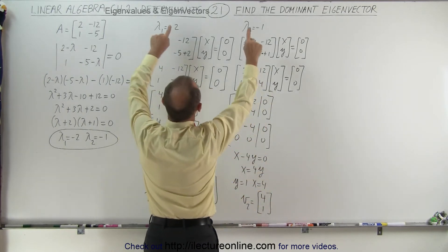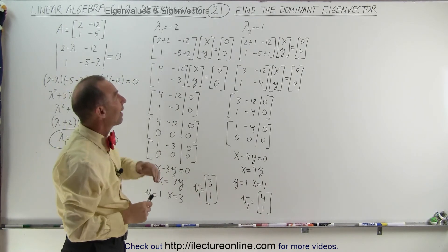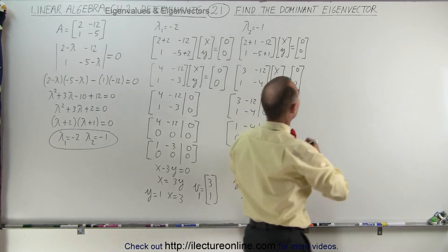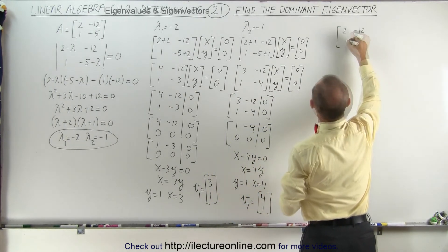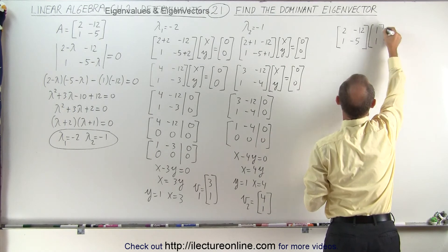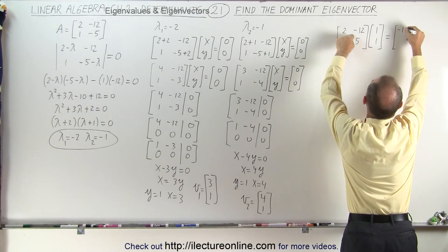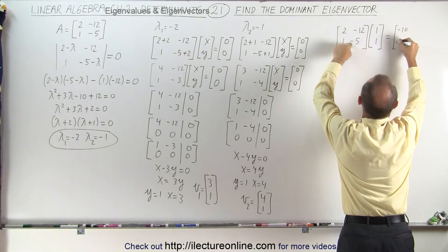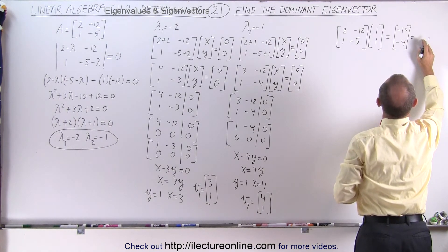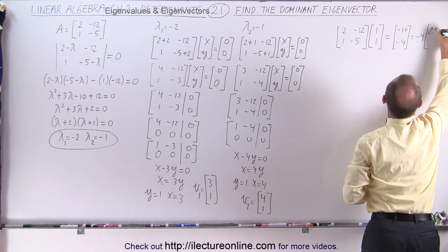Now we'll use the approximation method to find the dominant eigenvector and the corresponding eigenvalue. We start with matrix A — [2, minus 12; 1, minus 5] — and multiply it times a presumed eigenvector, starting with [1, 1]. Multiplying gives (2 minus 12) equals minus 10, and (1 minus 5) equals minus 4. Factoring out minus 4, this equals minus 4 times [2.5, 1].